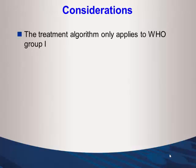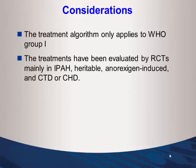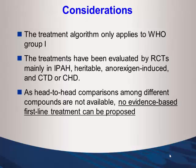Treatment algorithm considerations: it only applies to WHO Group 1. Treatments have been evaluated by RCTs mainly in IPAH, heritable, anorexigen-induced, connective tissue disease, and congenital heart disease. As head-to-head comparisons among different compounds are not available, no evidence-based first-line treatment can be proposed except for the WHO class 4 case. There is no way to say bosentan is better than ambrisentan or macitentan in head-to-head comparison — that data doesn't exist.